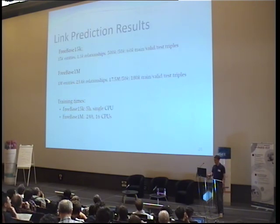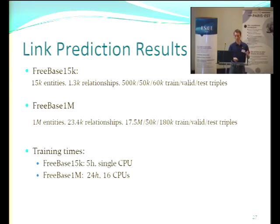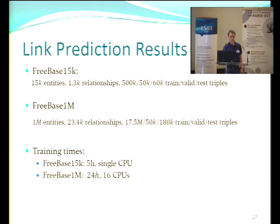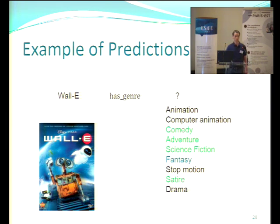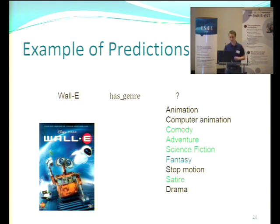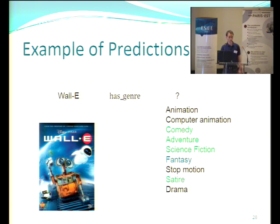We have two datasets for link prediction: one small extract from Freebase with 15,000 entities and 1,300 relationships, and a big Freebase with 1 million entities. To give indicative training times, training on 1 million entities takes about 24 hours on 16 CPUs. Just to give an example of predictions: for the film Wall-E, we predict what genre it has. The green ones are the genres present in training, the blue one is the test triple which is true, and the black ones are other answers from the system neither in train nor test. Animation and computer animation seem rather true even though they are not in the database.